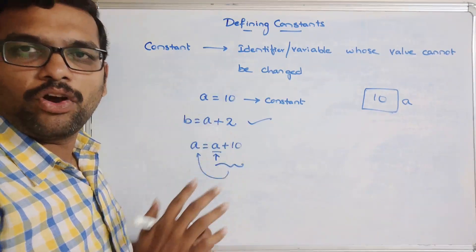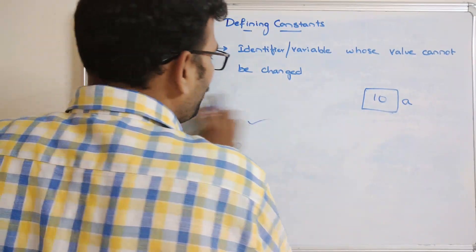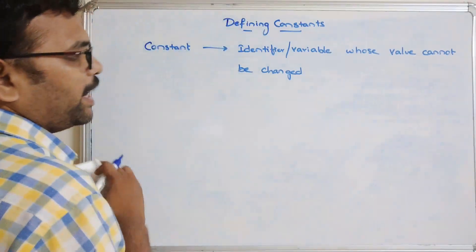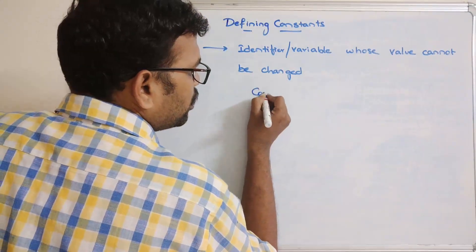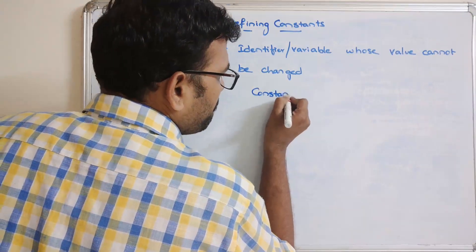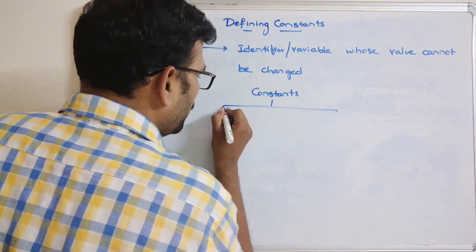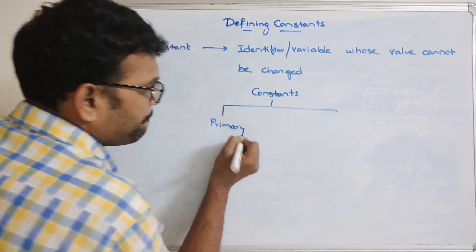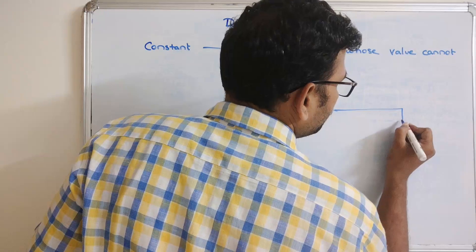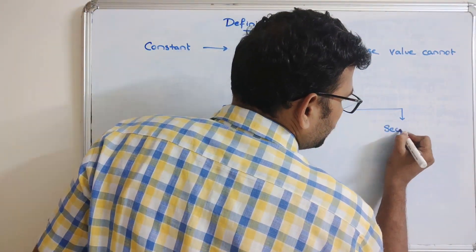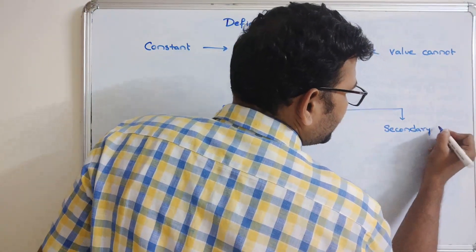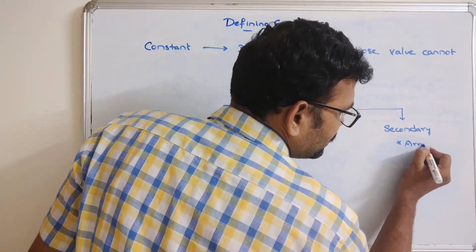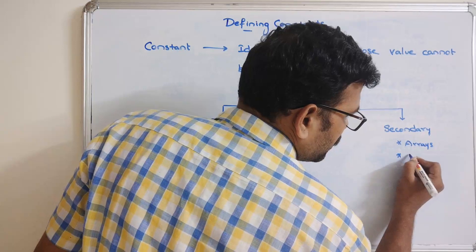In C programming there are many constants, mainly classified into two categories: primary constants and secondary constants. Secondary constants include arrays and structures.